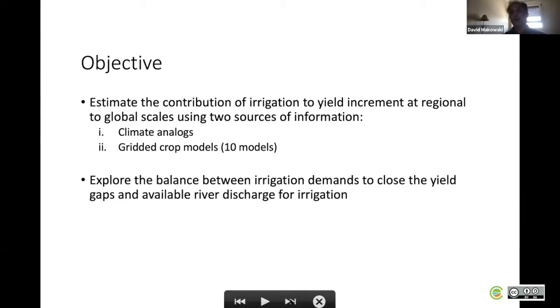The second objective was to explore the balance between irrigation demands to close the yield gaps and the available river discharge for irrigation.